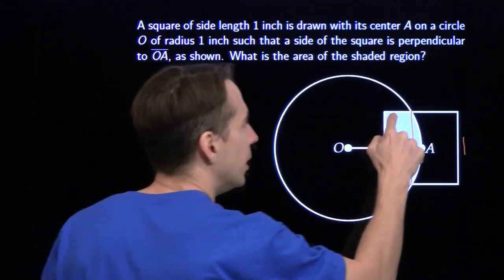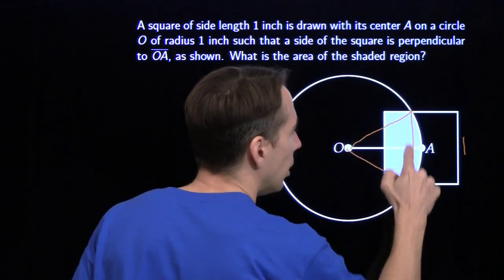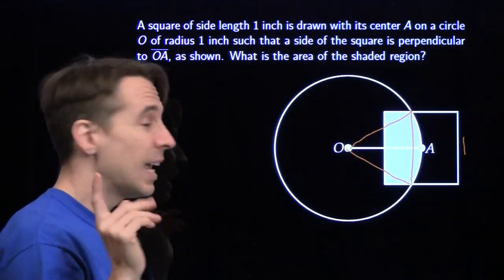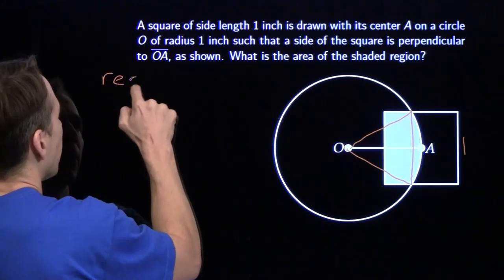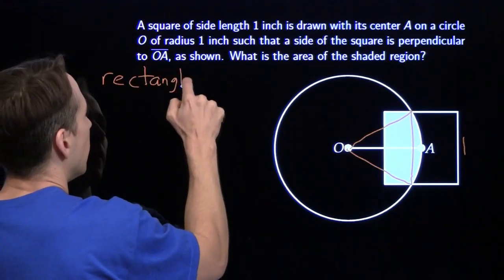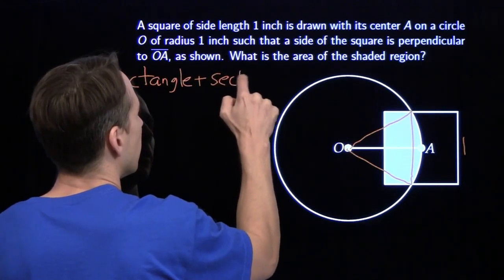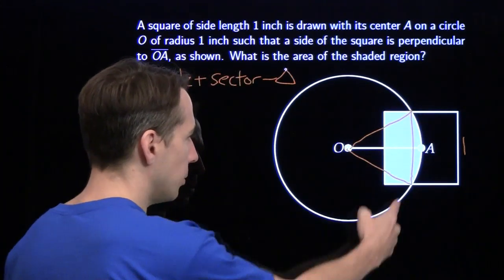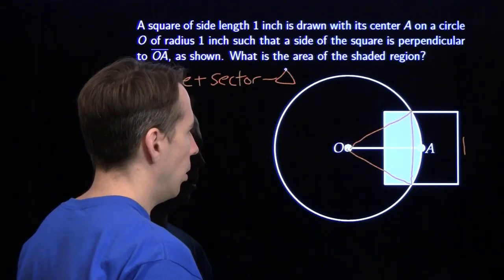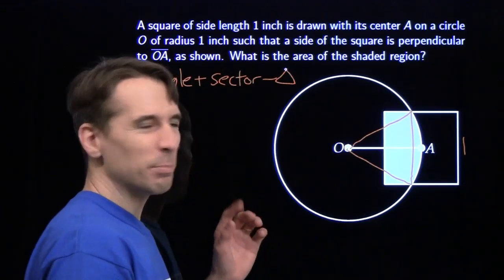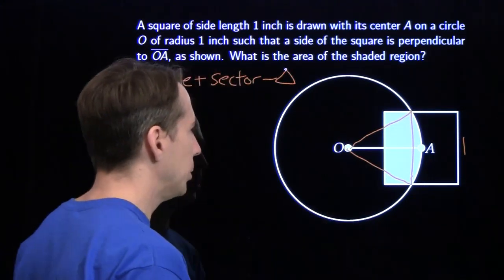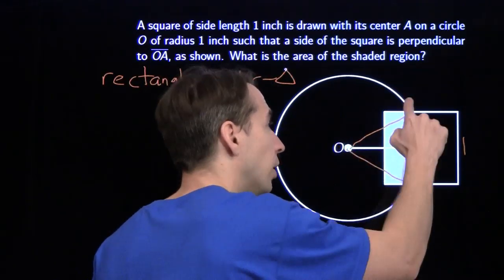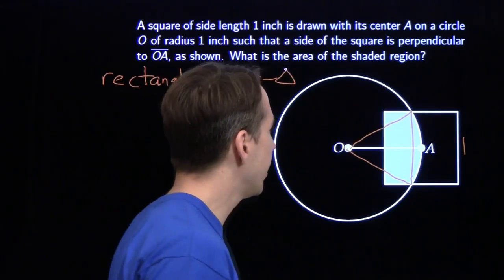We start with this sector, then subtract off this triangle, and we're left with this region out here. Now we have a plan: the weird area equals the rectangle plus the sector minus the triangle. We have one side length of the rectangle, but I don't know the other. Let's skip the rectangle for a minute and move on to the triangle. We have a side length of one, and these are radii, each also one. So this is an equilateral triangle — and we know how to handle equilateral triangles.